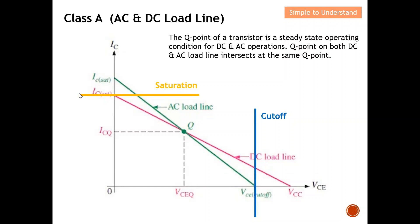From this diagram we can classify two important parameters. First is saturation — anything beyond this point means the transistor will saturate. We do not want the collector current IC to exceed this saturation point. The second parameter is cutoff — any condition where VCE exceeds the cutoff point means the transistor falls into the cutoff region and is not biased at all, so it will not operate at optimum performance.